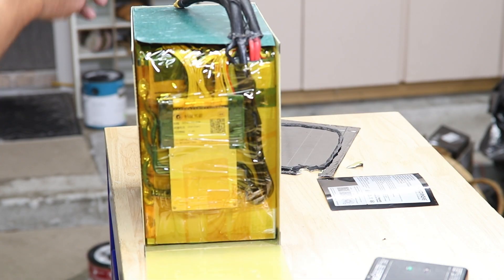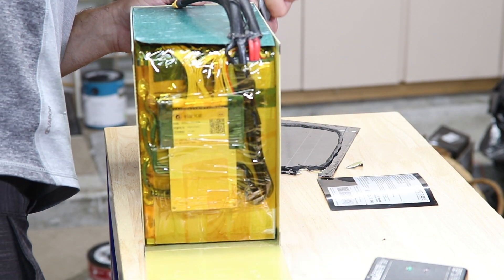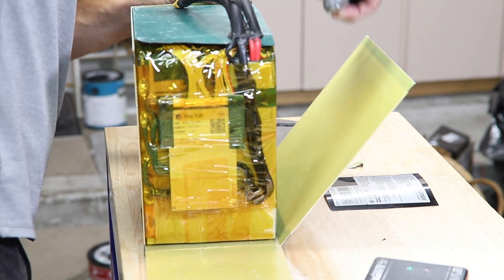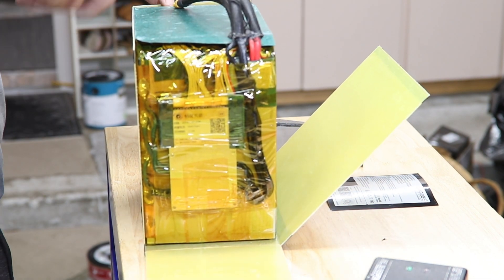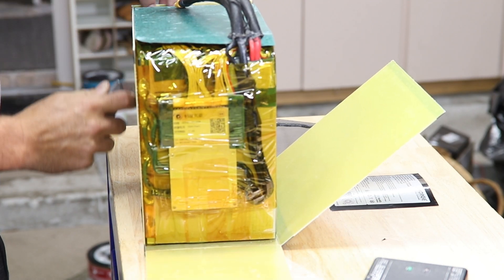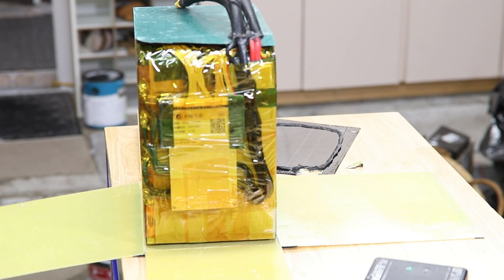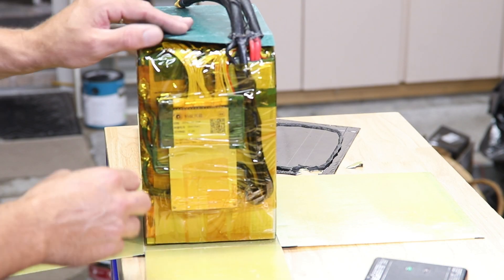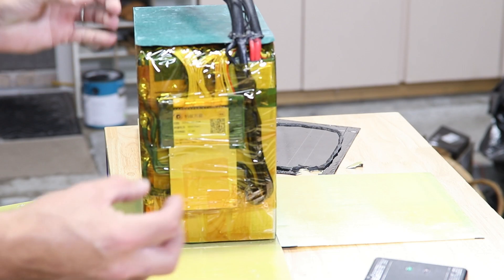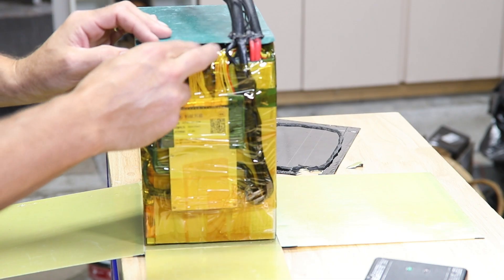Let's get these other sides off here, just like peeling a banana. Now I don't want to tear apart more than I have to. We really need to get to the balancing leads and then we can test the voltages of each group.